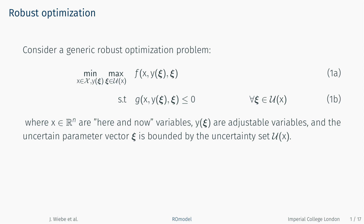Consider a generic robust optimization problem. This problem has a potentially uncertain objective F and at least one uncertain constraint G. X is the vector of decision variables and Y are adjustable variables which are decided after at least some of the uncertainty is revealed. Xi is the vector of uncertain parameters, bounded by the uncertainty set U, which may also depend on some of the decision variables.